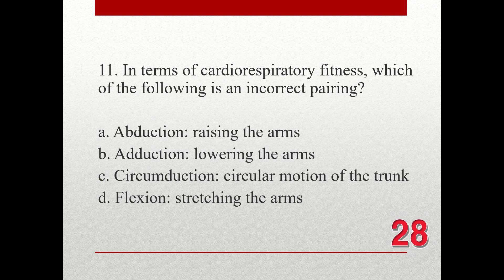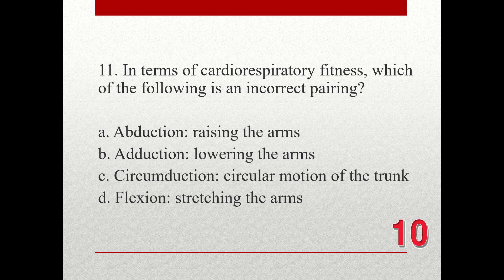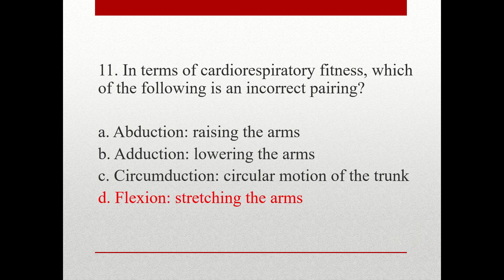Question number eleven. In terms of cardio-respiratory fitness, which of the following is an incorrect pairing? The choices are A. Abduction — raising the arms, B. Adduction — lowering the arms, C. Circumduction — circular motion of the trunk, D. Flexion — stretching the arms. The correct answer is D. Flexion, stretching the arms.